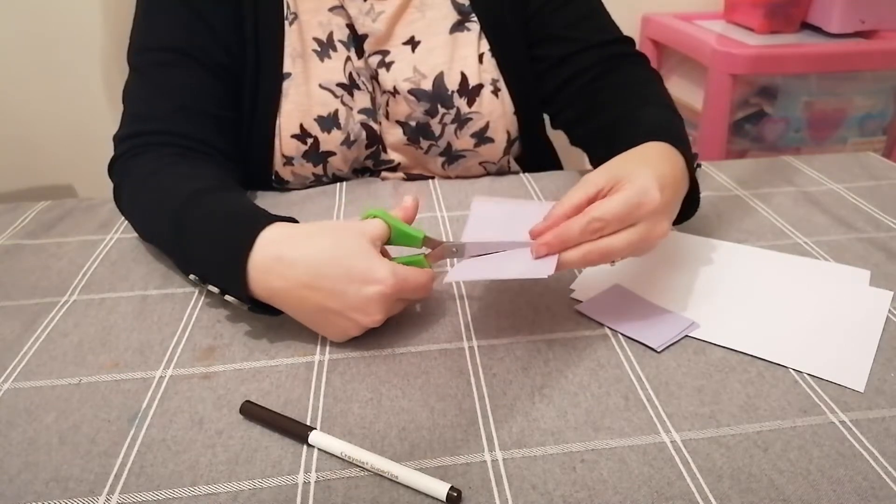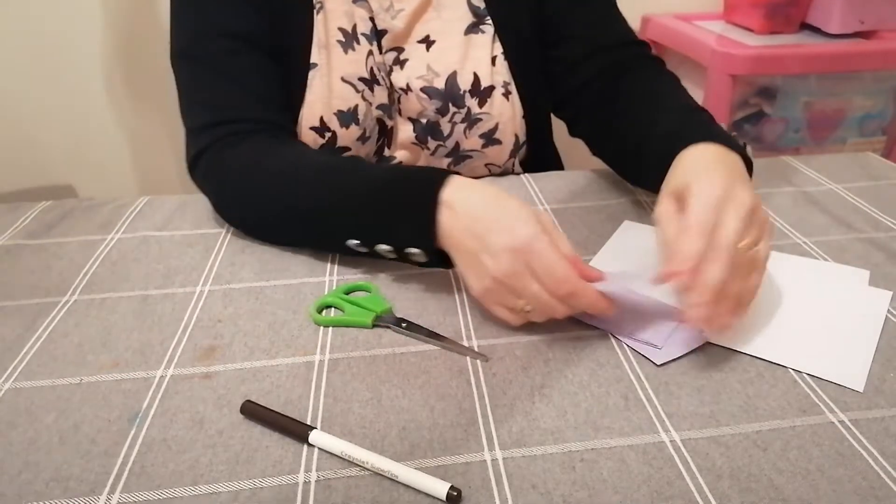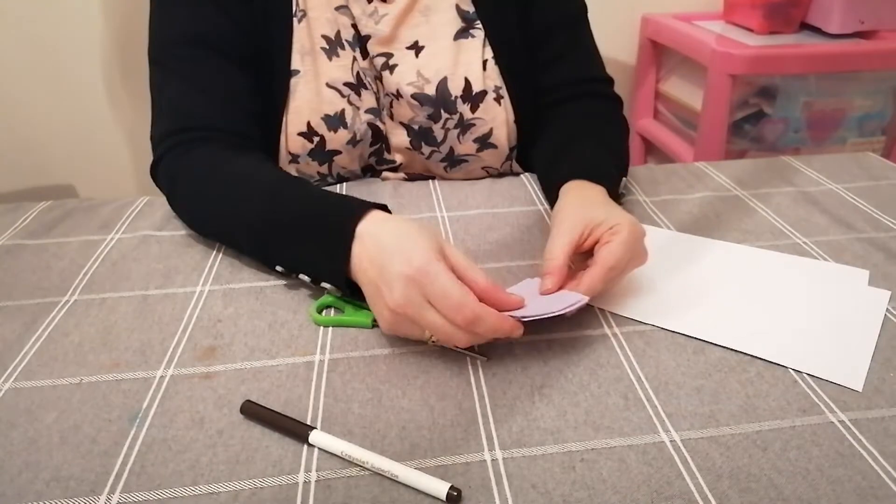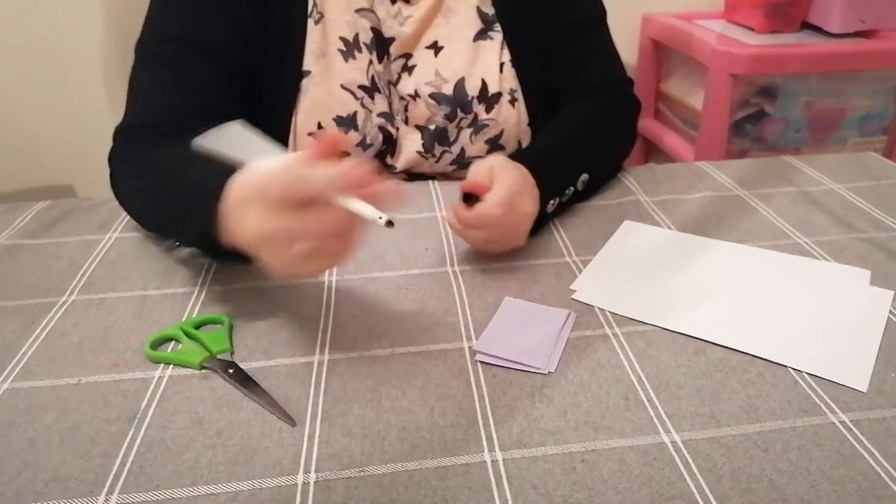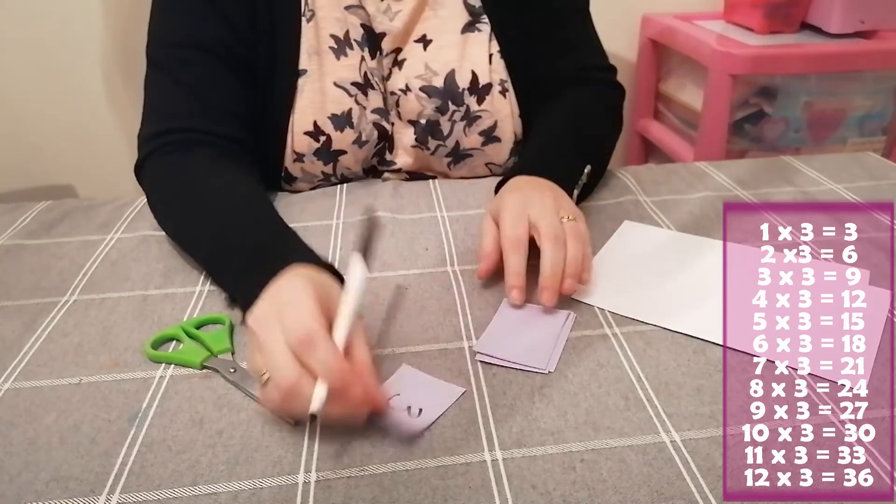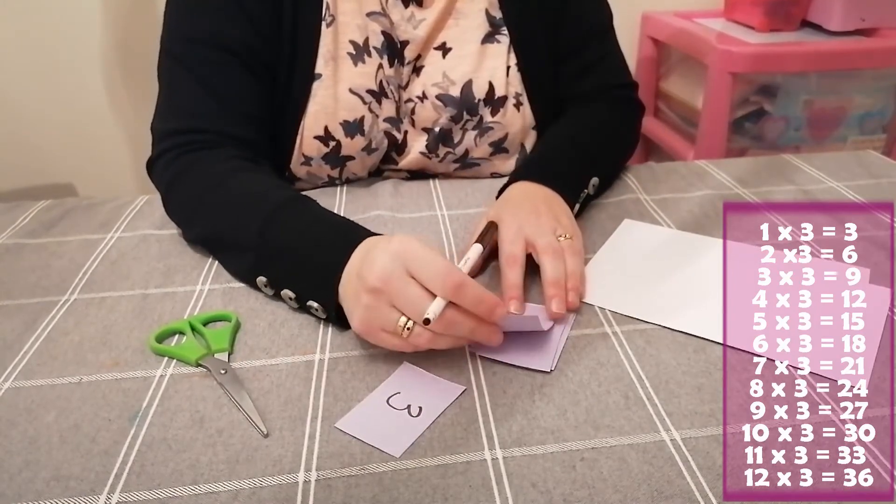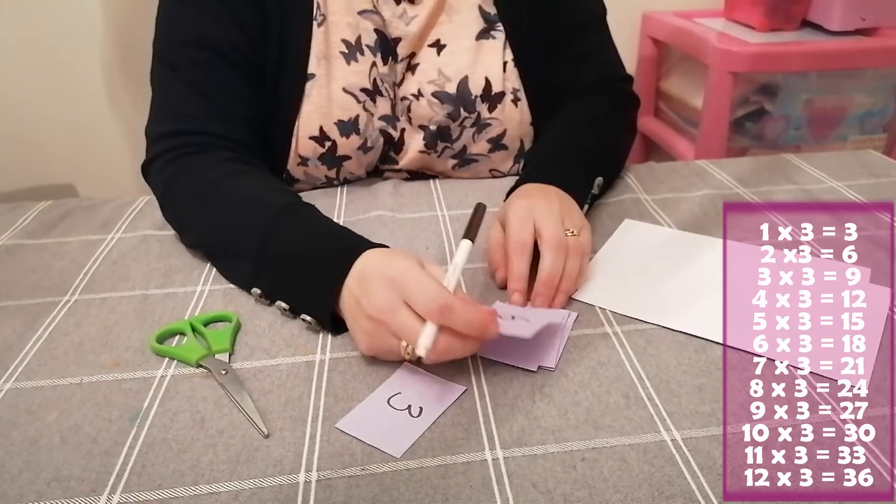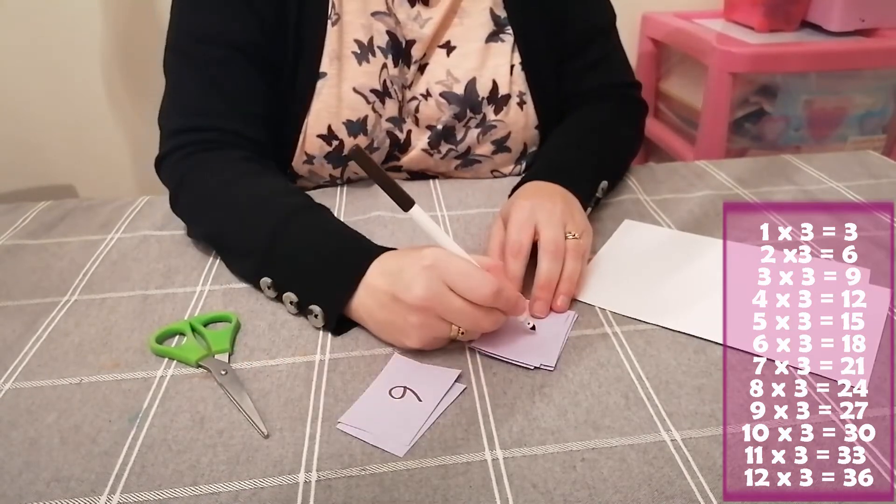Now on these sheets of paper, we're going to write the answers to the three times table. If you're not sure, you might want the facts on a screen or printout, school books somewhere nearby.